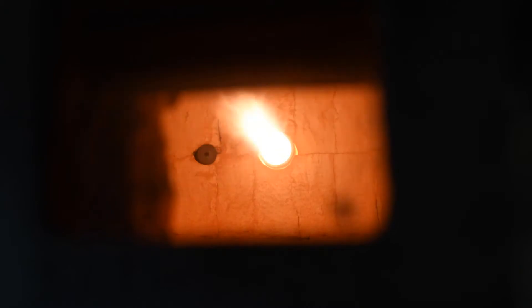Our regenerative system cycles between two burners. When one burner is firing, the other is exhausting. During the firing cycle, the burner will be using energy stored in its heat exchanger to preheat the combustion air.